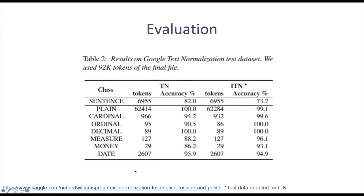We evaluated our system on the test set of the English Google text normalization dataset. This contains 92,000 tokens across various meta classes like cardinal, ordinal, decimal, etc. For inverse text normalization, we adapted the test set using a script that is also included in the framework. The text normalization system reaches an exact match sentence accuracy of 82 percent. The inverse text normalization reaches an accuracy of 73.7 percent.